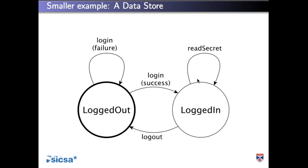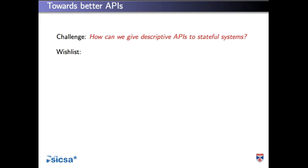The challenge is to come up with a system in which we can write a socket API that does exactly what the C implementation does, but expresses everything we need to know about it. People often say about Haskell libraries, 'I don't need to write documentation because the types tell me everything.' Not really — maybe to some extent. I kind of want to get to a point where we can say that with a little more honesty. What we're trying to do is give descriptive APIs to stateful systems.